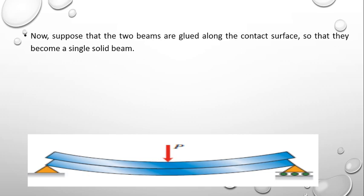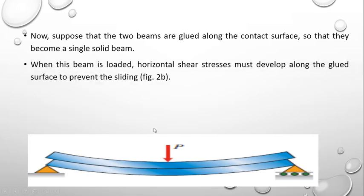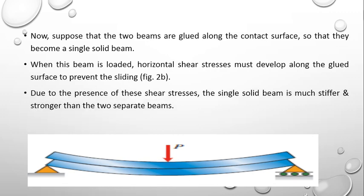Suppose that the two beams are glued along the contact surface so that they become a single solid beam. When this beam is loaded again, horizontal shear stresses must develop along the glued surface to prevent the sliding. Between the two beams at the contact surface, horizontal shear stresses develop so that the upper and lower beams don't slide past each other. Due to the presence of these shear stresses, a single solid beam is much stiffer and stronger than two separate beams.